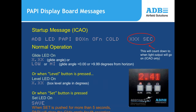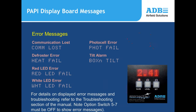The display shows messages that may appear to indicate a warning on the system, or during startup to provide information about when light output will be available. Various error messages are available that tell exactly what is happening inside the light unit.